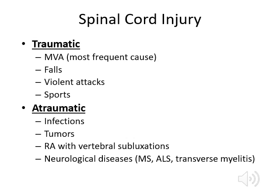You can also have atraumatic spinal cord injuries — spinal cord injuries because of infections, tumors, vertebral subluxations, or neurological diseases that affect the axons and the gray matter in the spinal cord, like MS, ALS, and transverse myelitis.